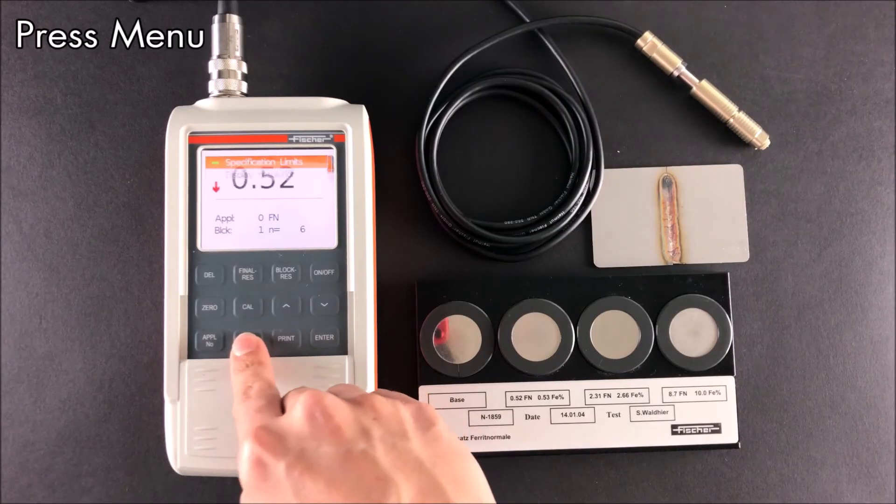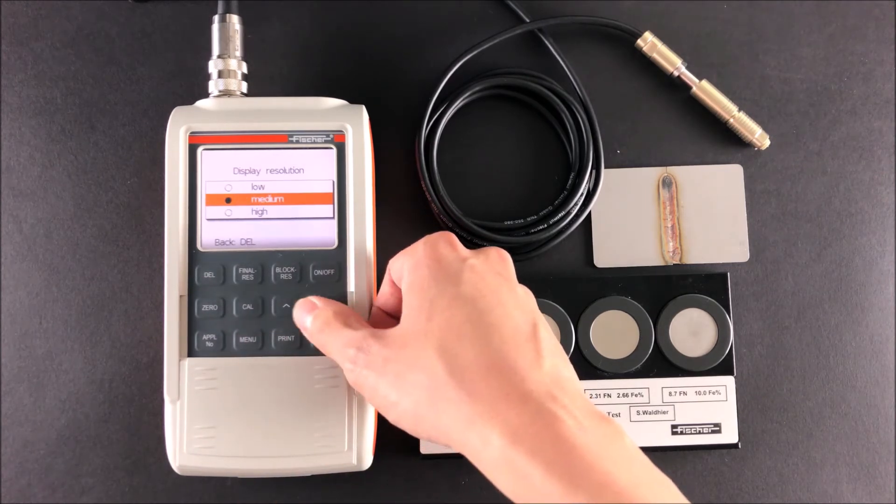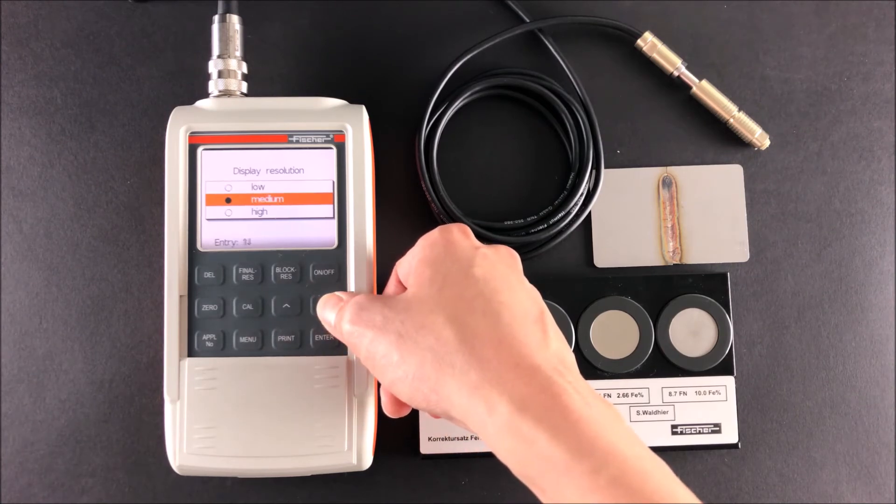Display resolution allows you to change the number of decimal places the measurement results will be displayed in. Low reduces the number of decimal places, while high increases the number of decimal places.